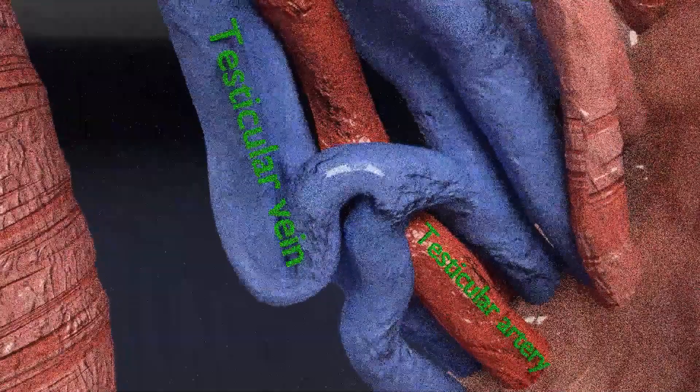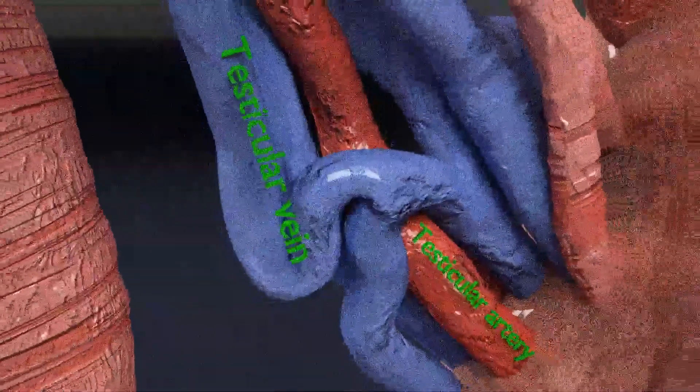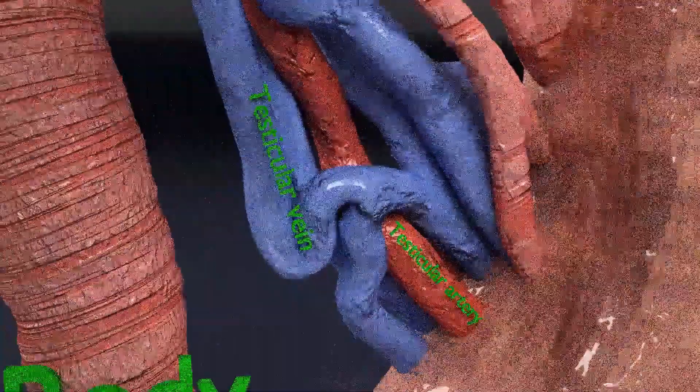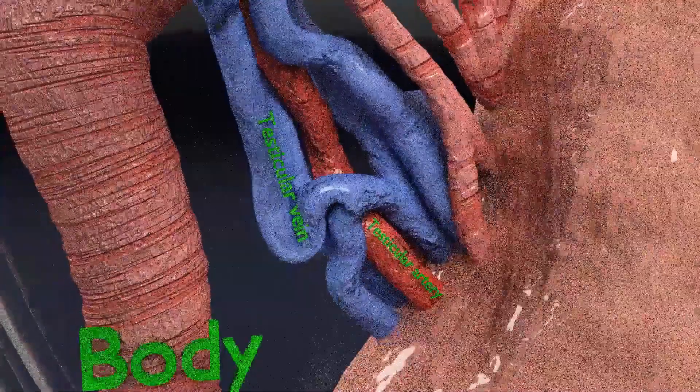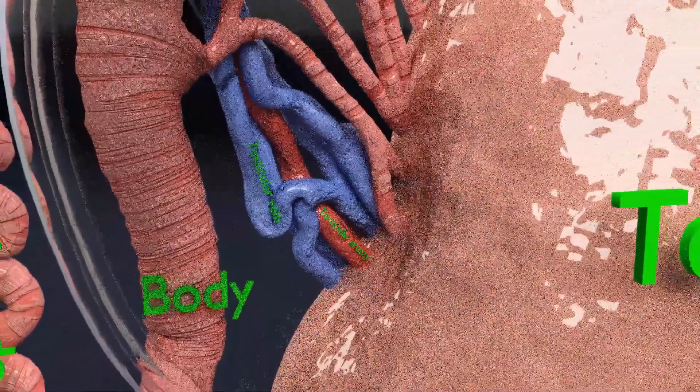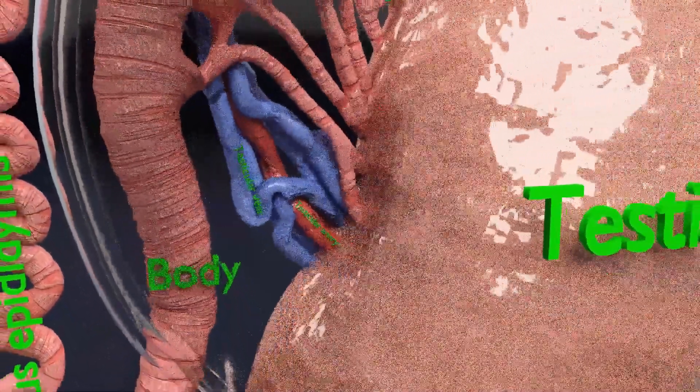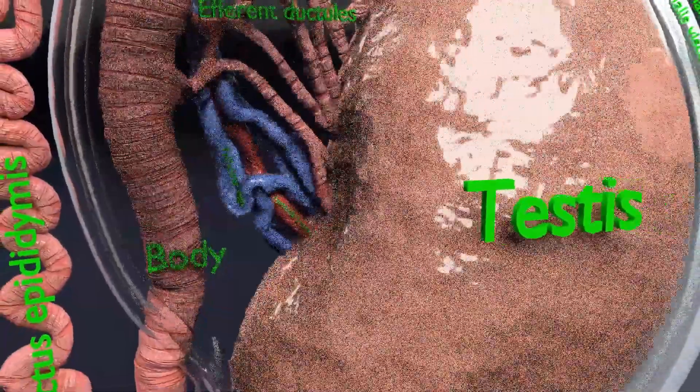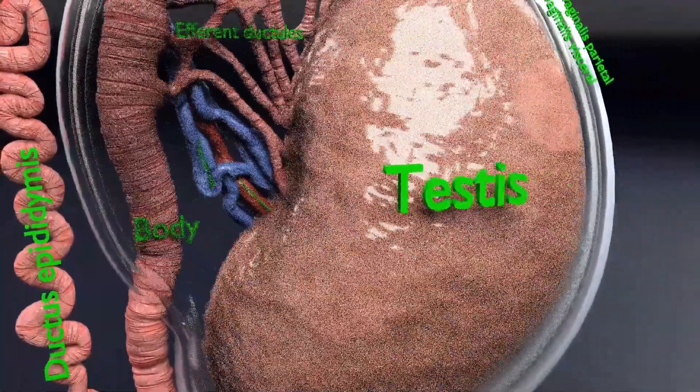The testicular artery, otherwise called the male gonadal artery, also called the internal spermatic artery, is a branch of the abdominal aorta that supplies blood to the testes. It is a paired artery with one for each of the testes.